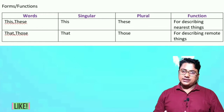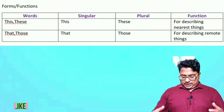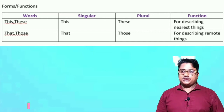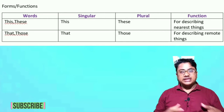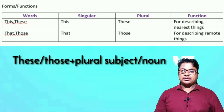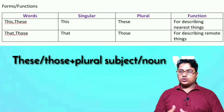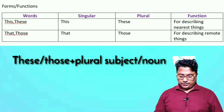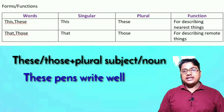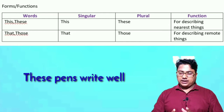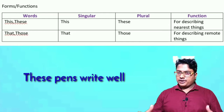Another example: 'These pens write well.' Some students commit mistakes — they think when we use 'these' we use a singular noun. Remind yourself: when we use 'these' or 'those,' we use plural nouns and plural verbs. So we say 'these pens write well' — not 'pen' and not 'writes,' but 'pens' and 'write.'